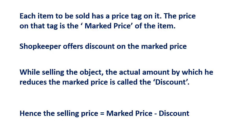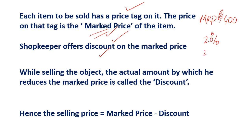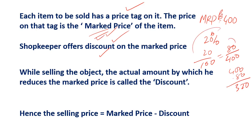Now, something basic about how things are sold in the shop or market. Every item has its own price tag — what is written on the price tag is called the marked price. The shopkeeper gives a discount on that marked price. Suppose the marked price written on the item is 400 rupees, and the shopkeeper is giving 20% discount. For every 100 rupees, 20 rupees discount is given — so for 400 rupees, 4 times means 80 rupees discount.